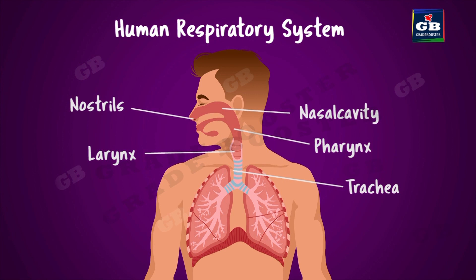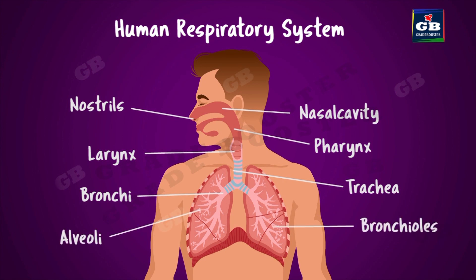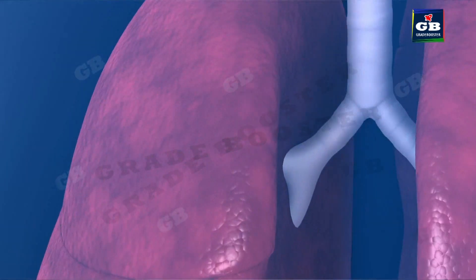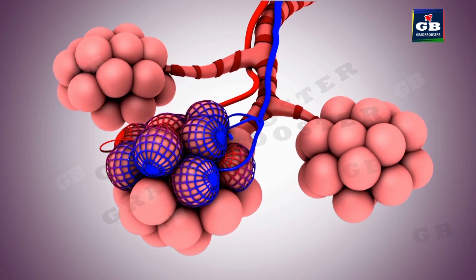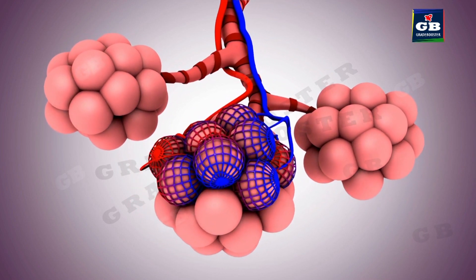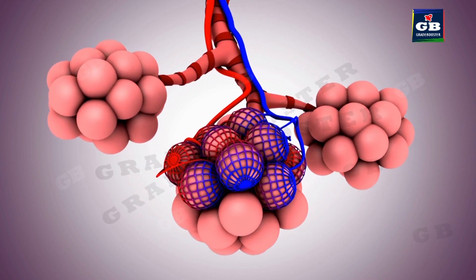The windpipe divides into two branches called bronchi. These are further divided into fine branches called bronchioles. Finally, the bronchioles are attached to small balloon-like structures called alveoli.